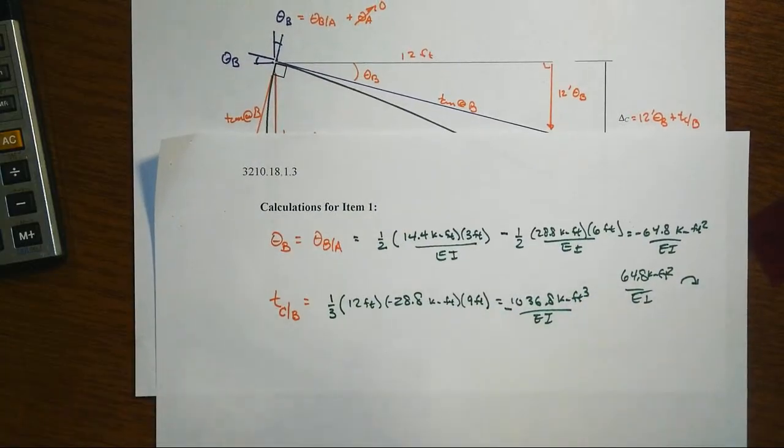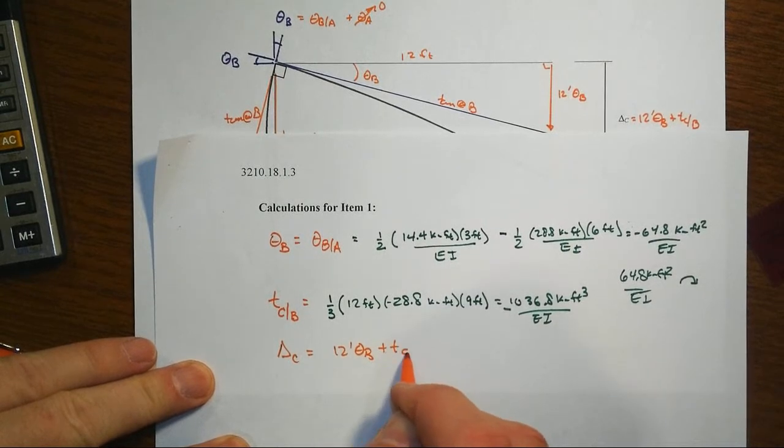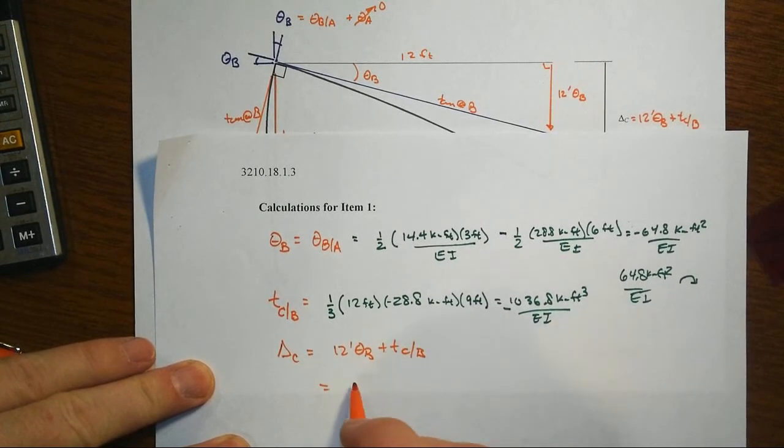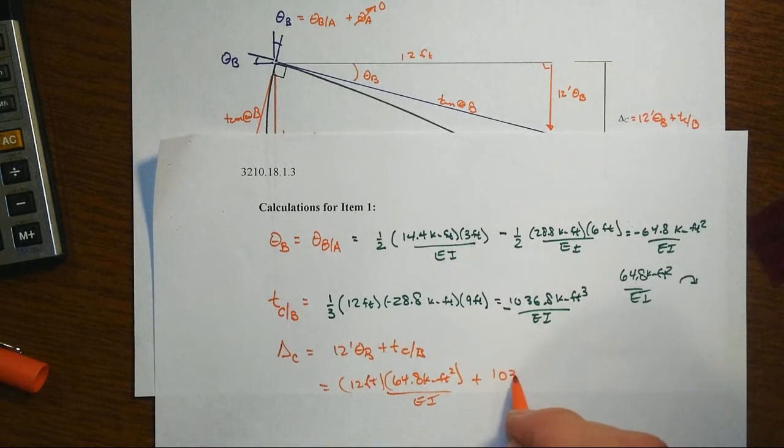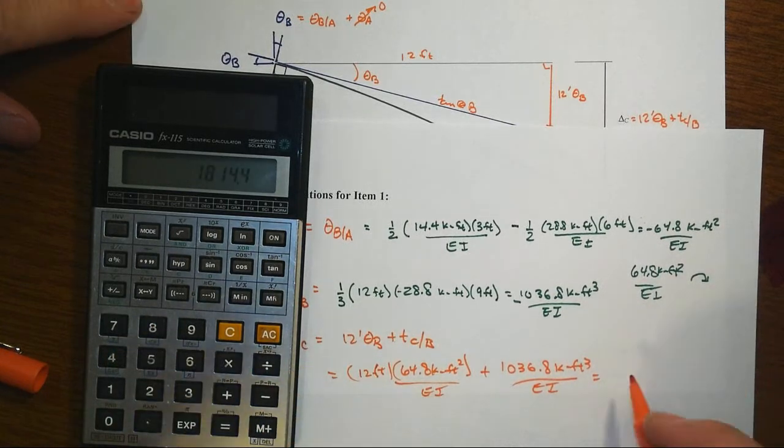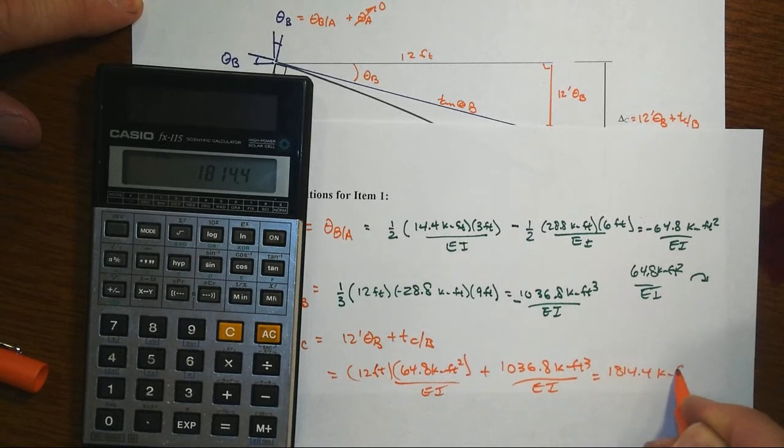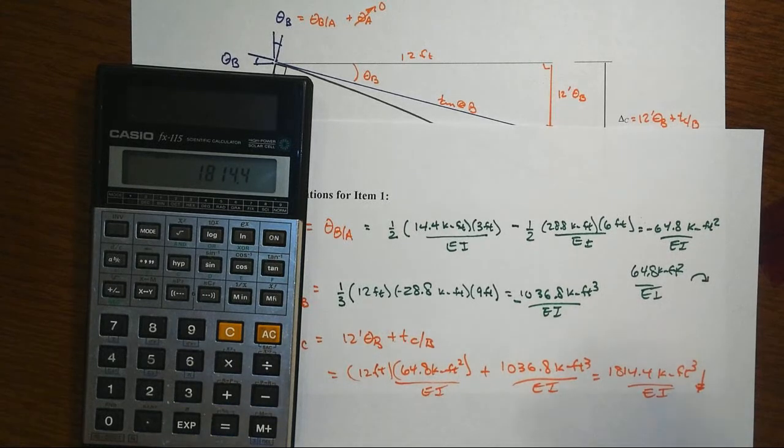Right, so that lets us then get to where we were desiring. We're going delta C equals 12 foot theta B plus T_CB, and so we've got a downwards of 12 feet times our 64.8 kip foot squared over EI. And then, well, that's going downwards plus the other part that's going downwards, 1036.8 kip feet cubed over EI. And so that will be a total of 1814.4 kip foot cubed over EI, again going downwards. So now let's go get the final number here by substituting in.